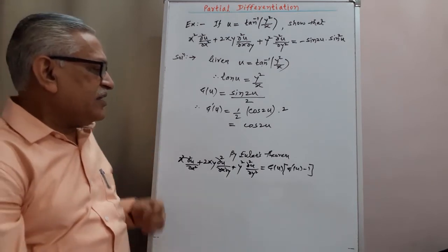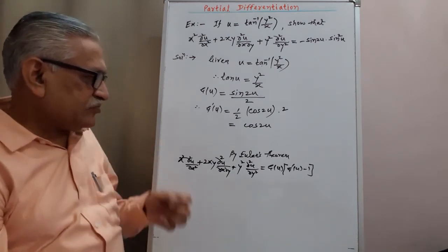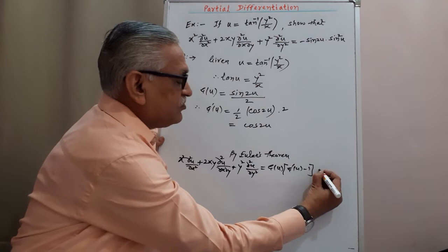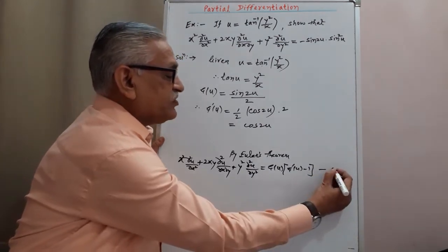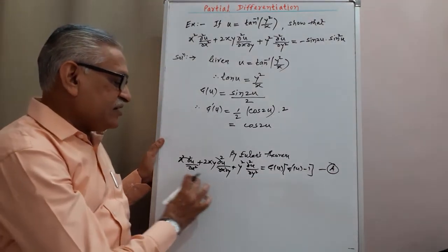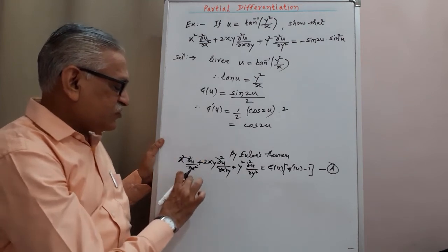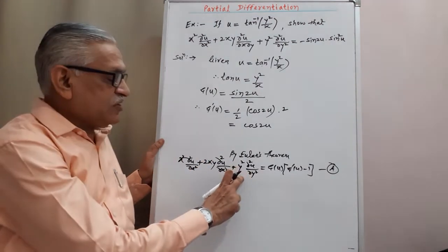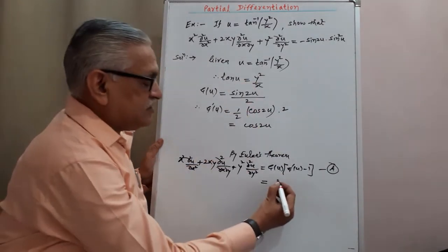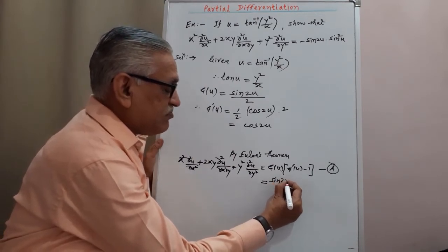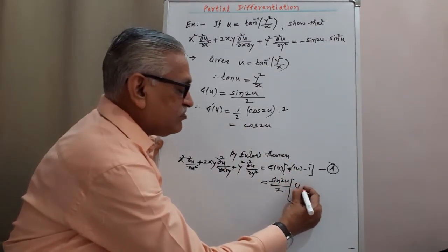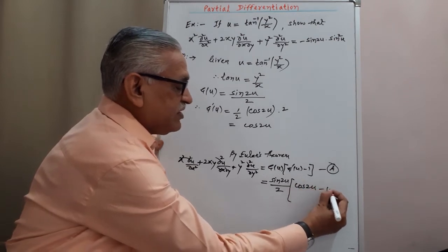Substituting these two values of g(u) and g'(u) into equation (A), the left-hand side remains as x² ∂²u/∂x² + 2xy ∂²u/∂x∂y + y² ∂²u/∂y², and that is equal to [sin(2u)/2] · [cos(2u) − 1].